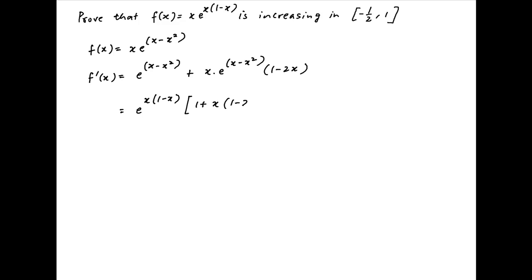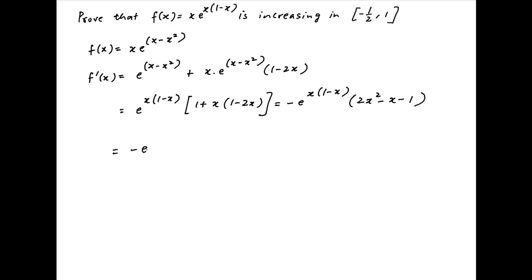Taking e raised to the power x times 1 minus x as a common factor, we get in brackets 1 plus x times 1 minus 2x, which equals minus of e raised to the power x times 1 minus x times 2x squared minus x minus 1.